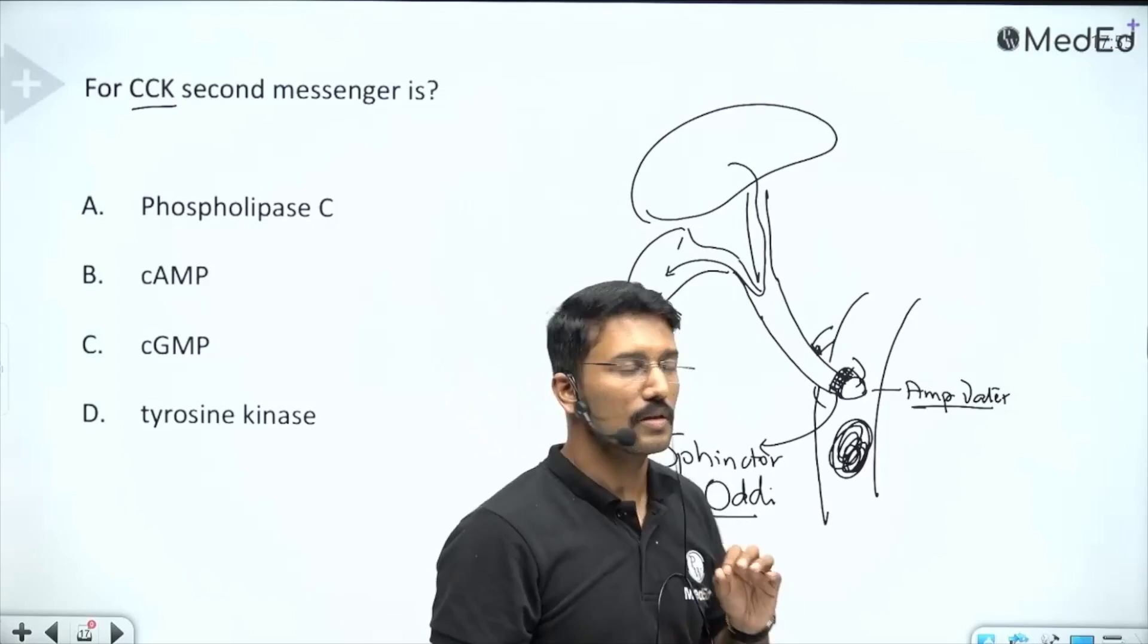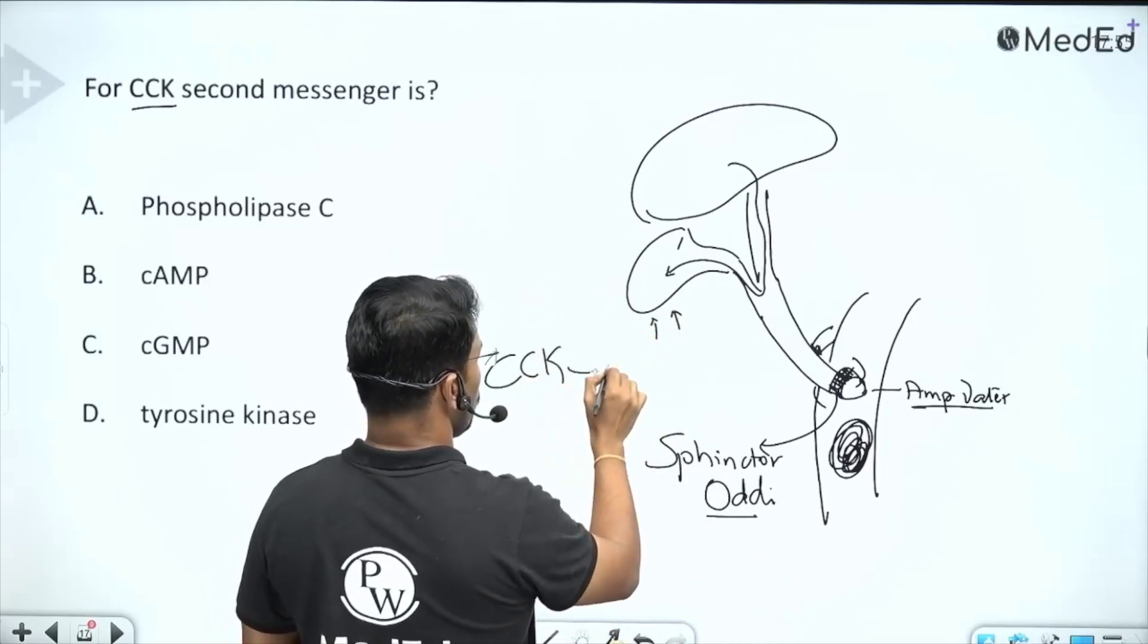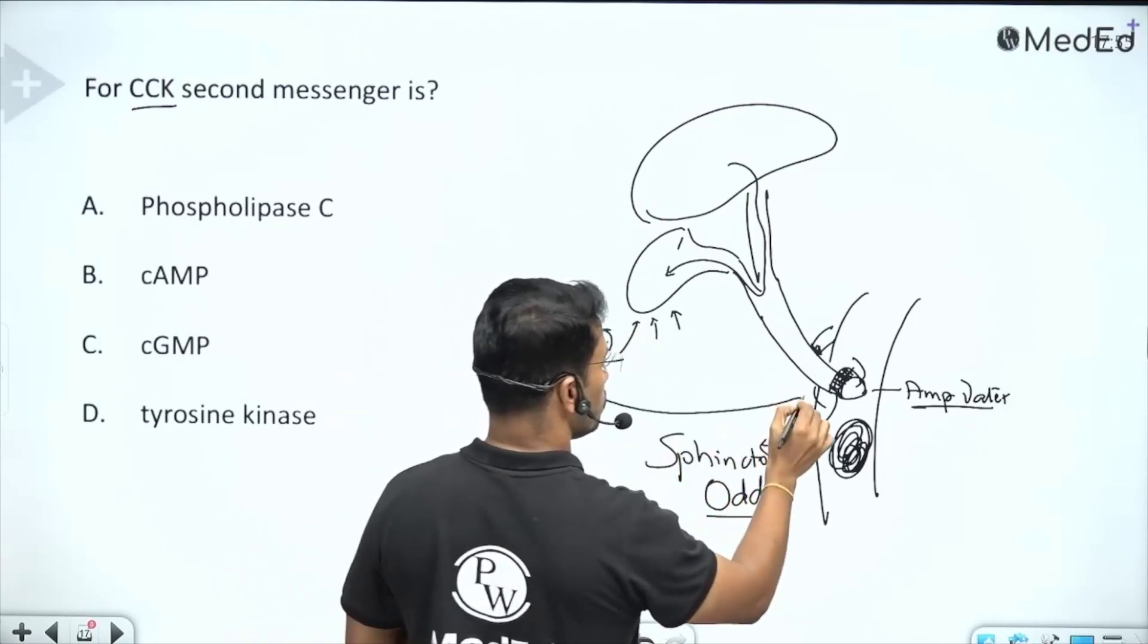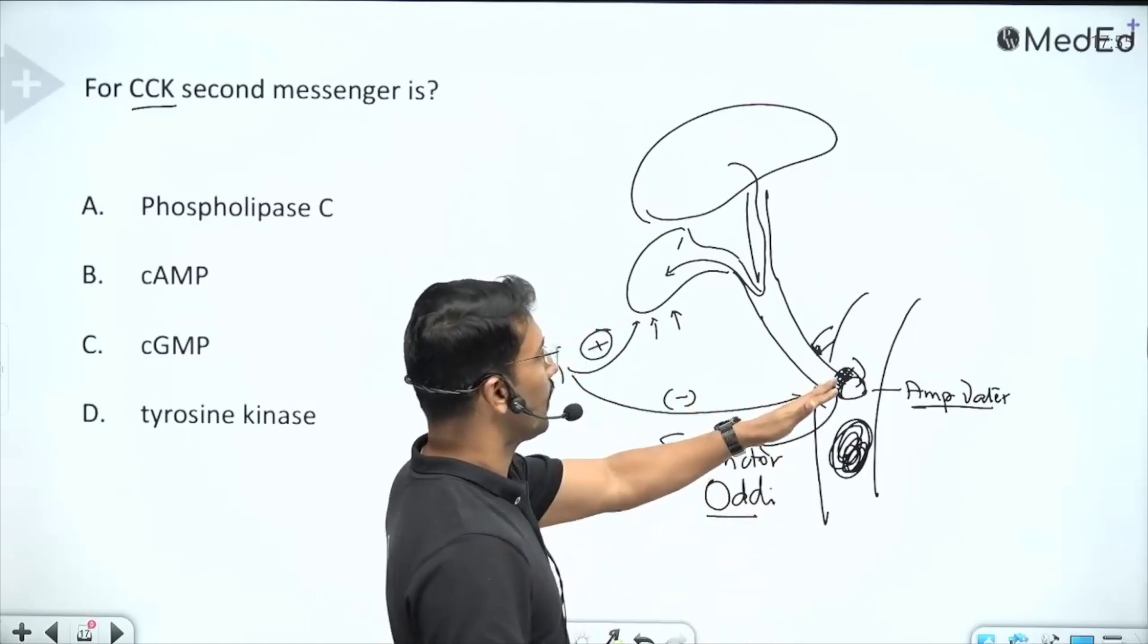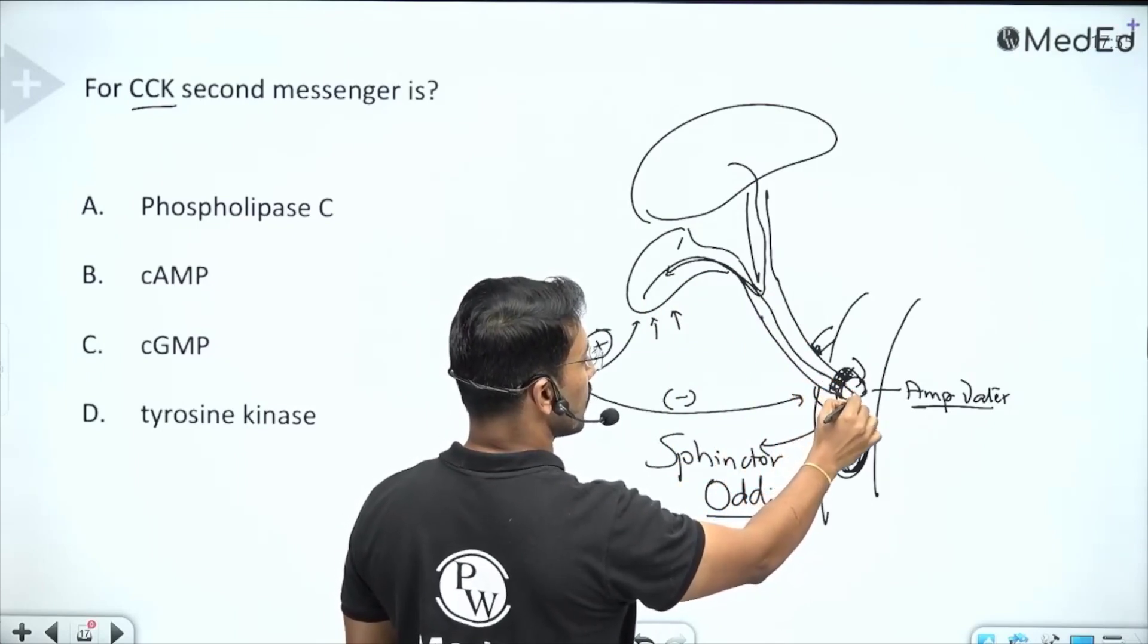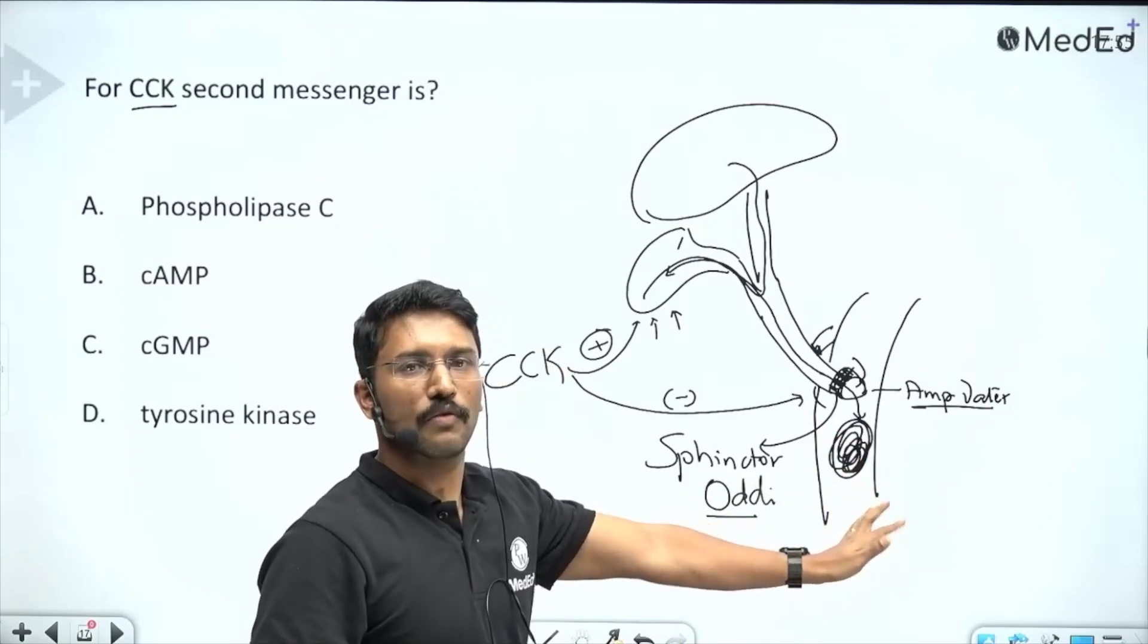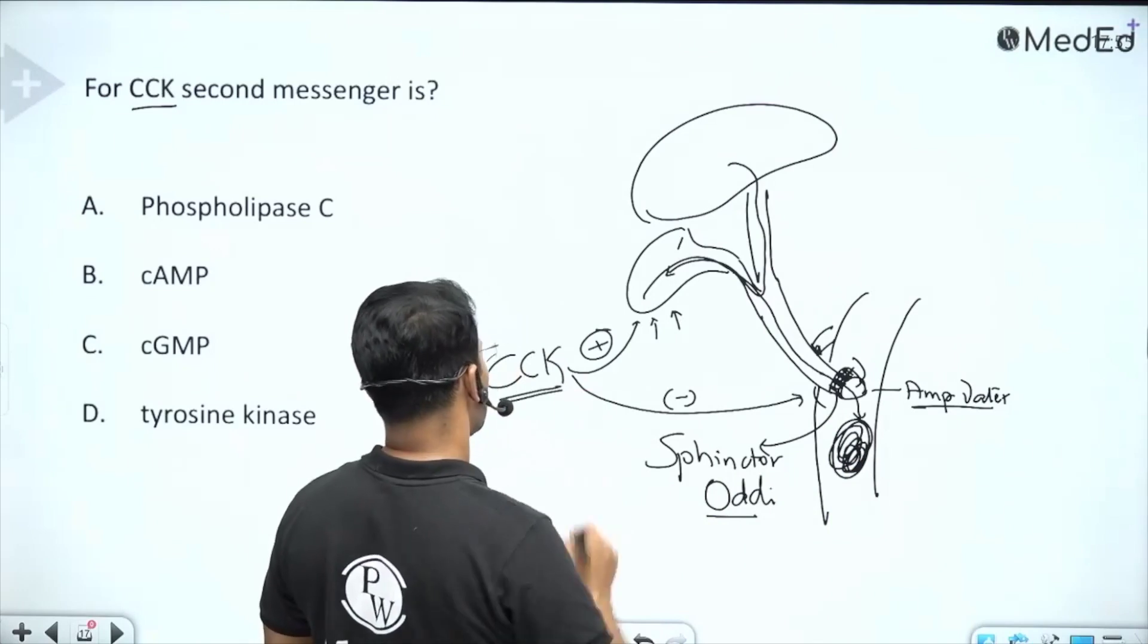This action is facilitated by cholecystokinin. Cholecystokinin will stimulate gallbladder contraction and it will relax or inhibit the contraction of sphincter of Oddi. Once the gallbladder contracts, the bile will come out, and because your sphincter of Oddi is relaxed, it will come into the duodenum, mix with the food, and facilitate fat absorption. That is the function of cholecystokinin.